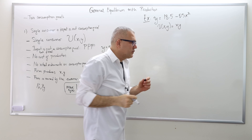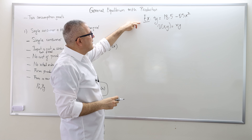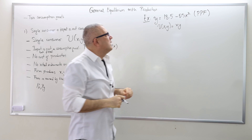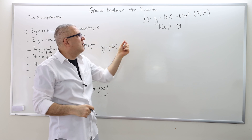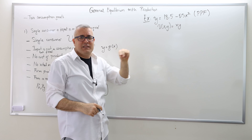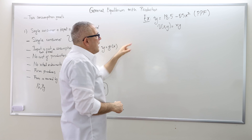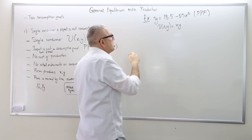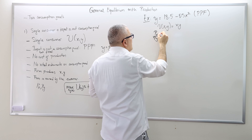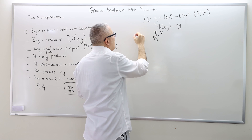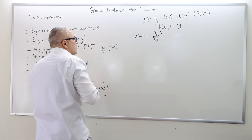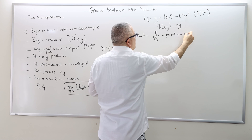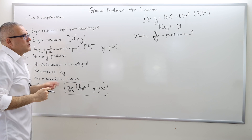Here is the numerical example I'm going to solve. The production possibility frontier is given by Y = 13.5 − 0.5X². It looks a bit ugly, but at the end it gives nice X and Y values and a nice price ratio. This is the utility of the agent. The firm is owned by the consumer, and the question is: what are the prices of good X and good Y in general equilibrium — that is, what is the price ratio in Walrasian equilibrium?